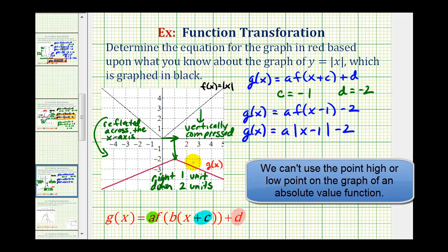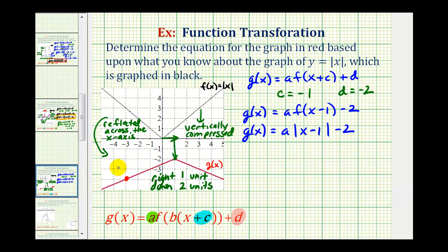So for example, if we select this point here where the x coordinate is negative three and the y coordinate is negative four, this means g of negative three must equal negative four. Let's determine g of negative three. We would have a times the absolute value of negative three minus one. That's negative four minus two. This must equal negative four.